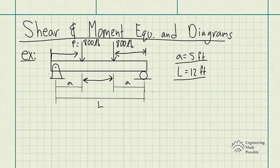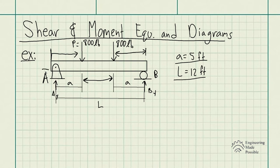Let's go ahead and name the supports: support A on the left, with reaction components A_Y and A_X, and support B on the right with B_Y. Remember, we're doing everything in variable form here, so let's go ahead and draw the first portion.